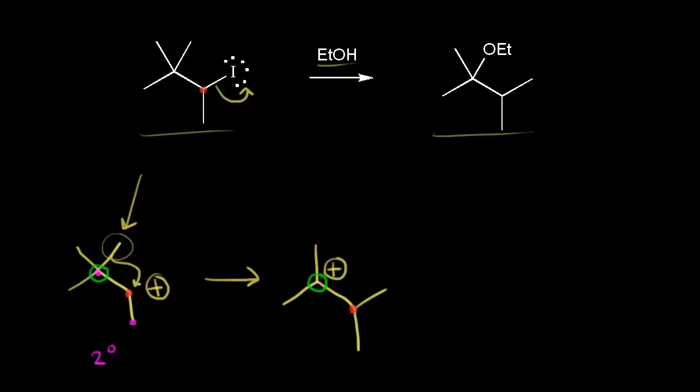What kind of carbocation is it? The carbon circled in green is directly bonded to one, two, three other carbons, so it is a tertiary carbocation, which we know is more stable than a secondary carbocation. So a methyl shift increases the stability, going from a secondary to a tertiary carbocation.